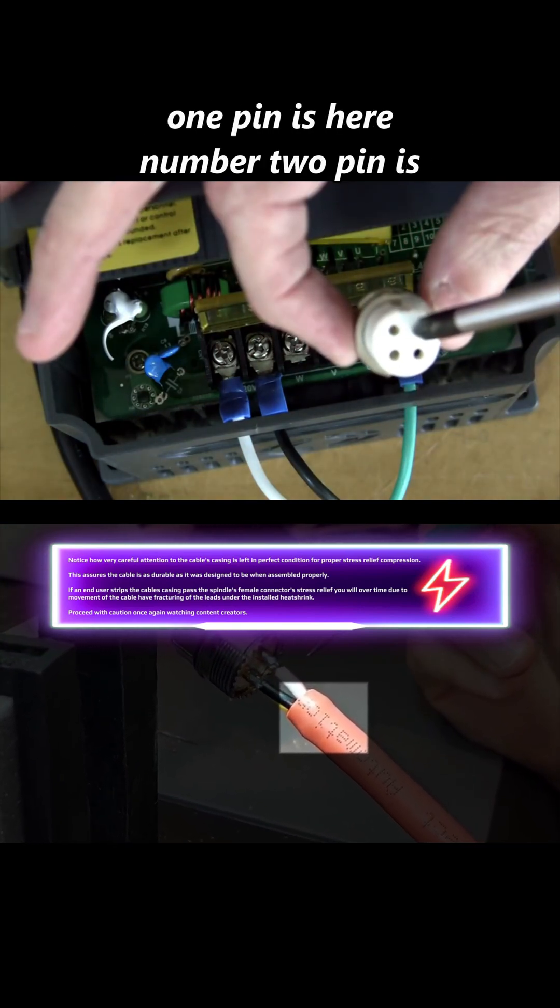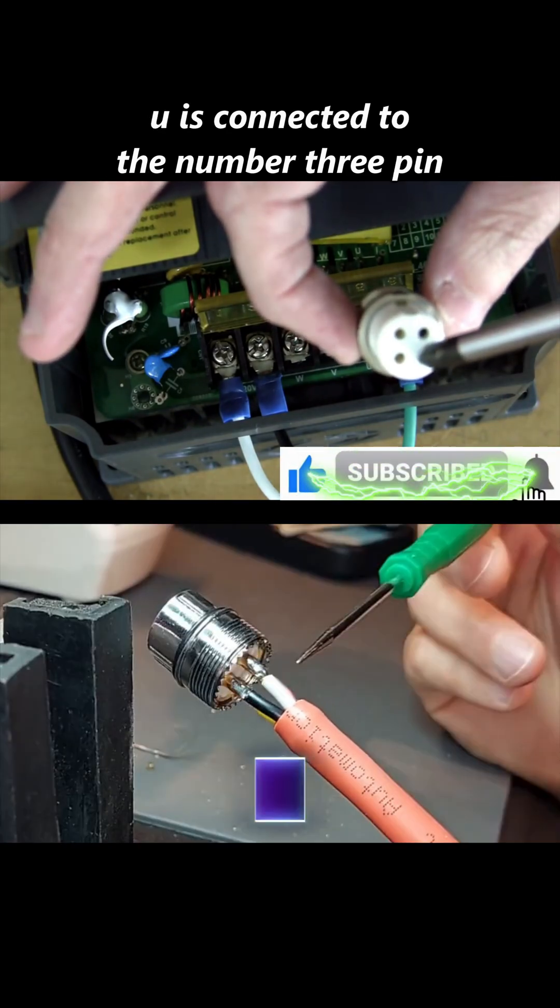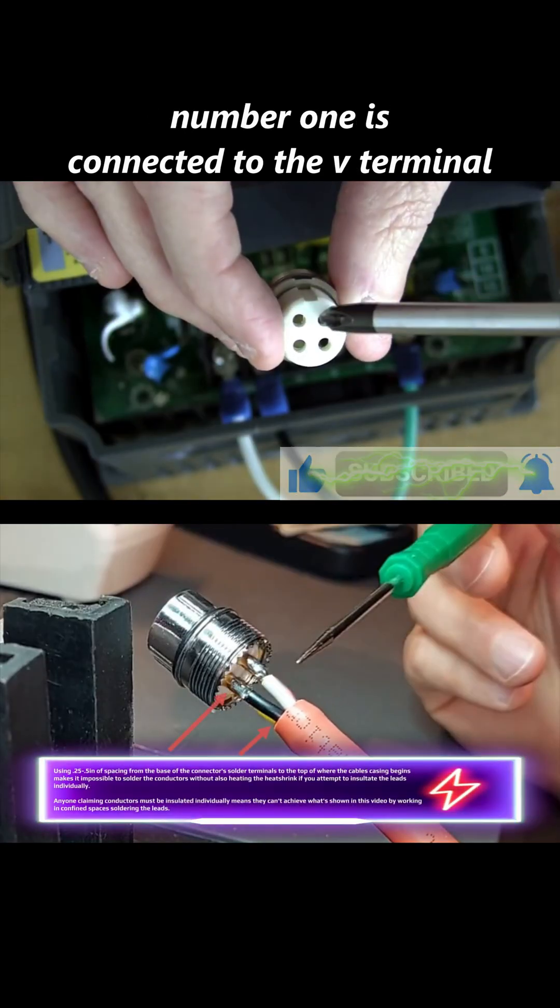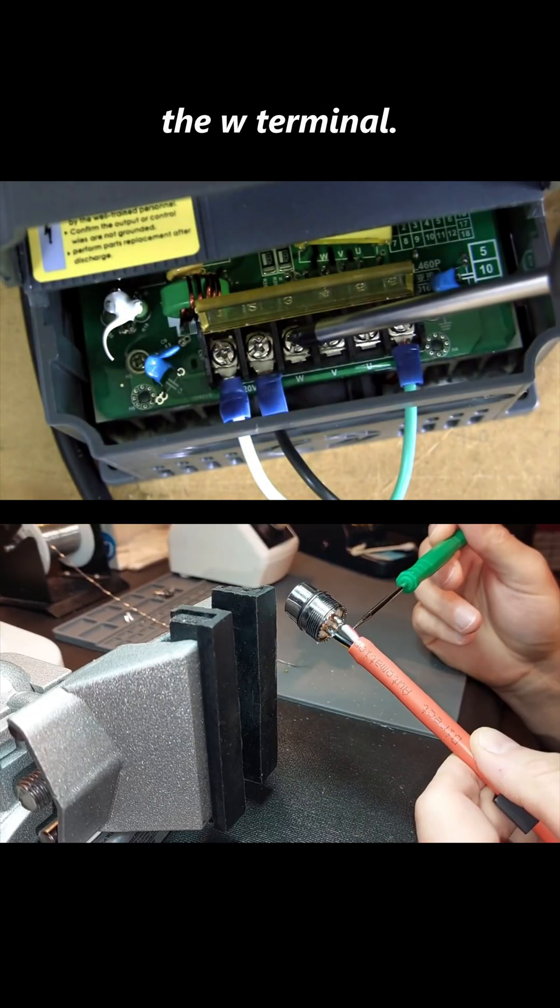Number one pin is here, number two pin is here, and number three pin is here. U is connected to the number three pin, number one is connected to the V-terminal, and the number two pin is connected to the W-terminal.